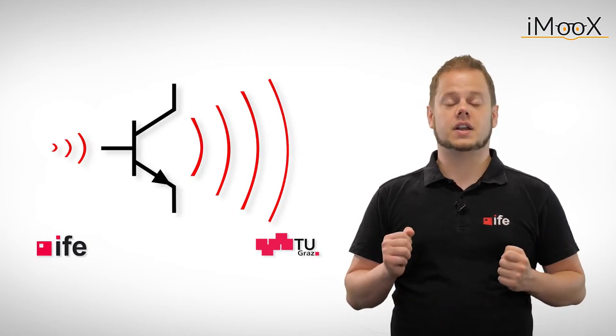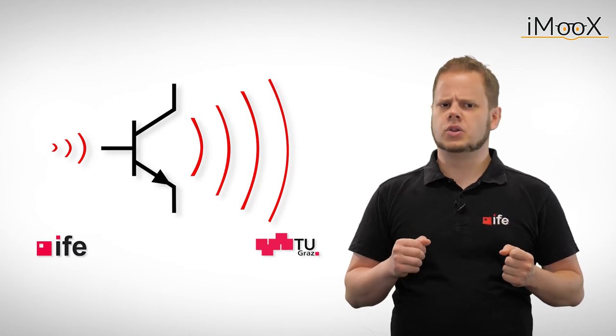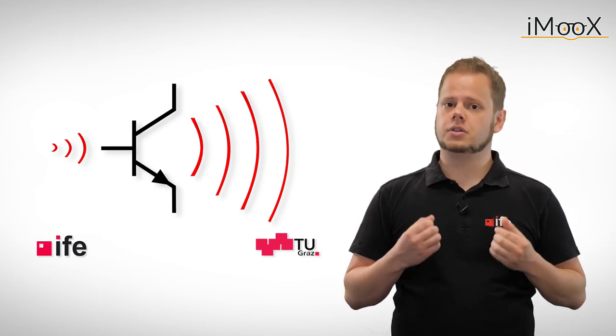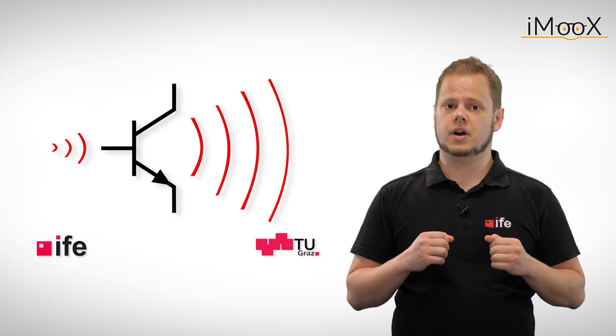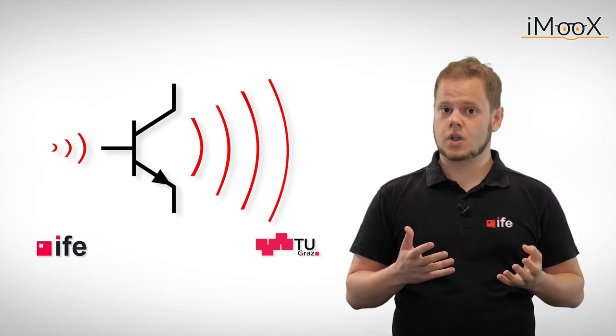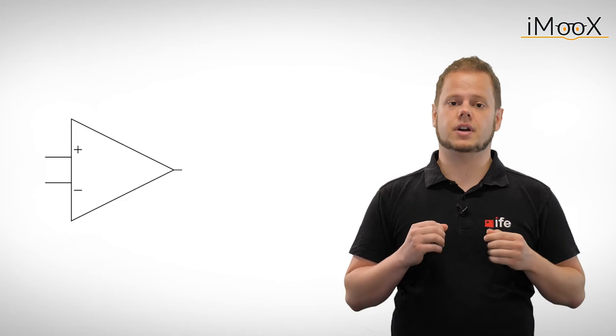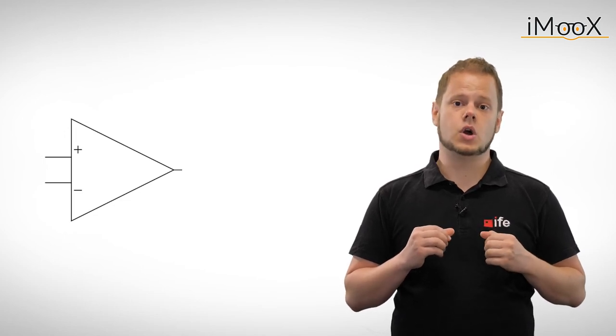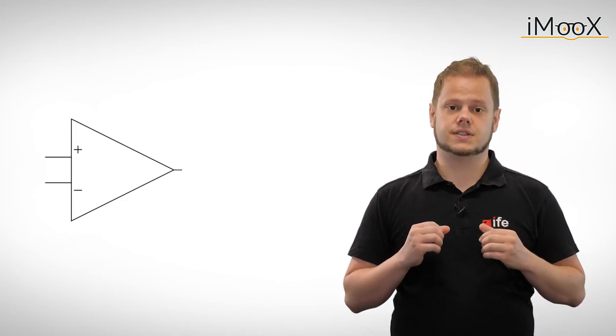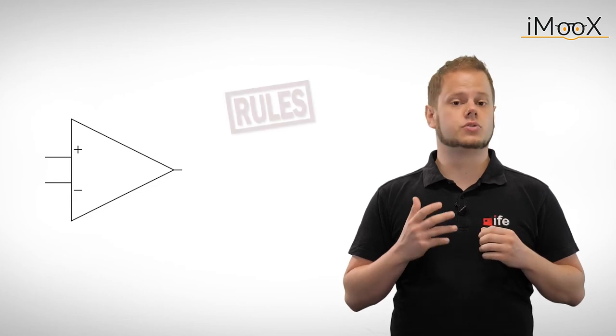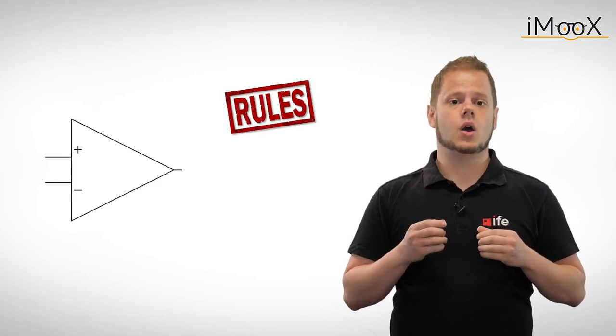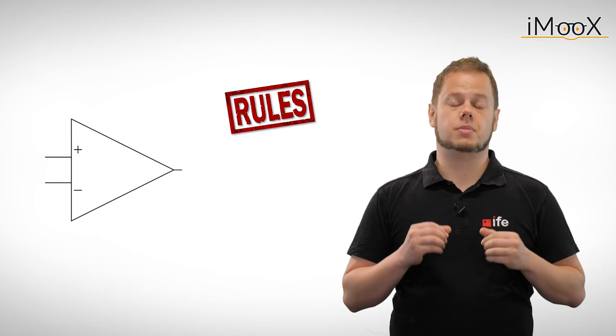Now we know what's inside an operational amplifier. But do we have to deal with the internal structure of an operational amplifier each and every time? Fortunately not. An operational amplifier has three properties which are used in circuit analysis. These can be seen as the rules we can apply when we are dealing with operational amplifier circuits.